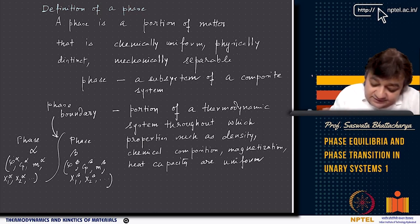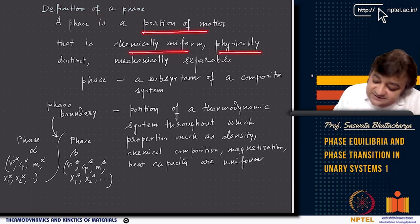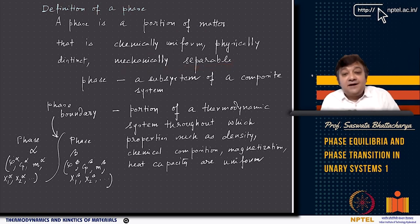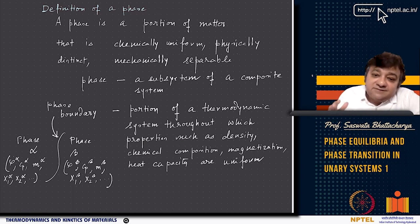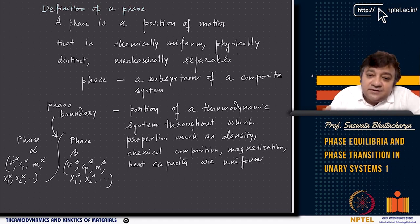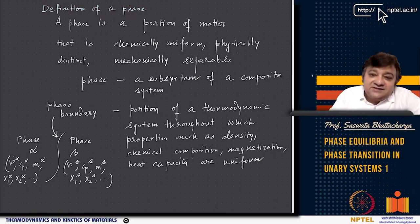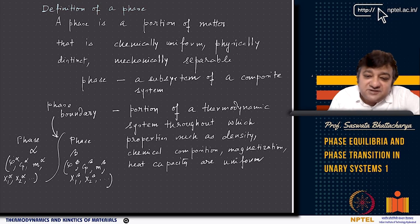What is a phase? A phase is a portion of matter that is chemically uniform, physically distinct, and mechanically separable. This is the textbook definition. I can also define phase as a subsystem of a composite system. A composite system contains subsystems, is isolated from the surroundings, and its subsystems are separated by walls, each characterized by its own internal energy, volume, and mole number of species.